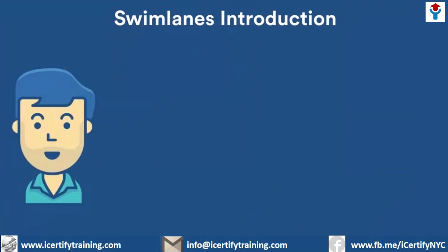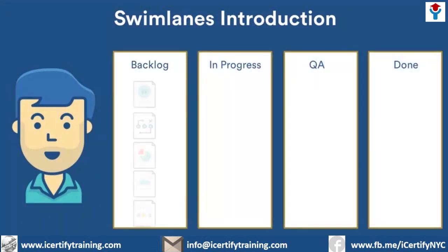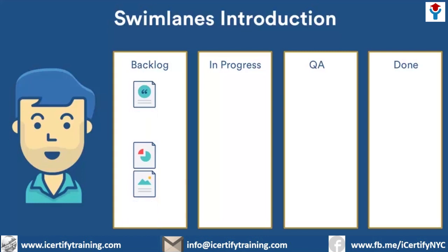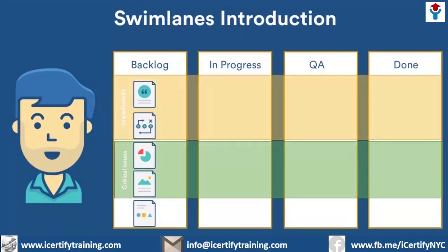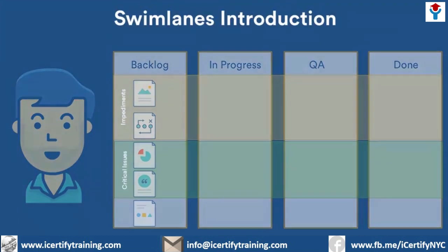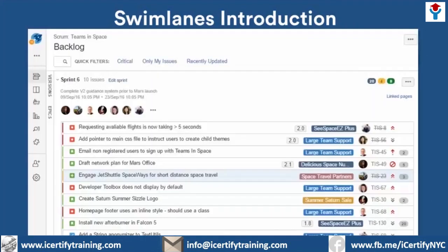We've talked about quick filters. Now let's look at swim lanes. Quick filters and swim lanes are similar — both allow you to see issues on your board in a more easily interpreted display. Whereas quick filters temporarily change the subset of issues displayed on your board, swim lanes invoke a more permanent change. Swim lanes group similar issues together horizontally, by type or category. Let's go to the active sprints view of my team's board and look at a few swim lane examples.